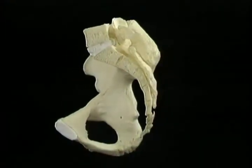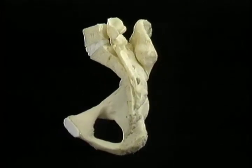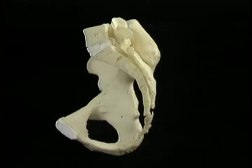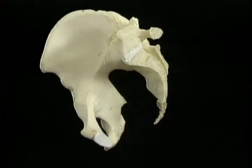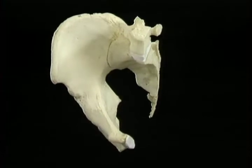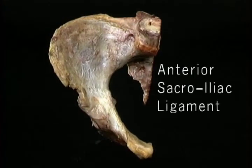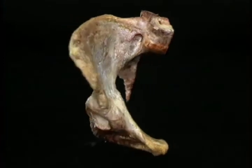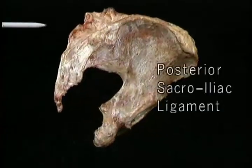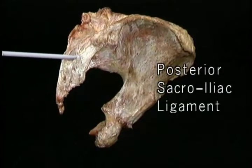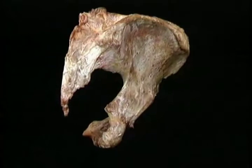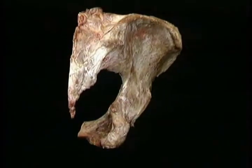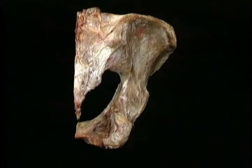Now that we've looked at the dry bones, we'll look at some major ligaments which are important in holding the sacrum and the hip bones together. The weight of the body is transmitted from the vertebral column to the hip bone at the sacroiliac joint. The sacroiliac joint is strengthened behind and in front by ligaments: the anterior sacroiliac ligament in front and the massive posterior sacroiliac ligament behind. In addition, the sacroiliac joint is strengthened by two major ligaments which pass from the sacrum to the ischium, the sacrotuberous and sacrospinous ligaments.